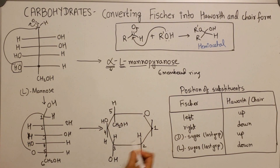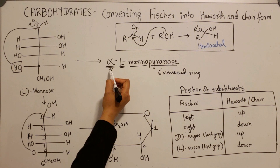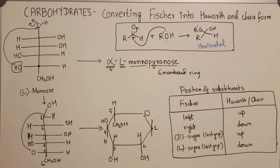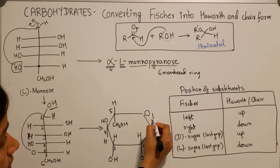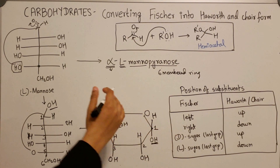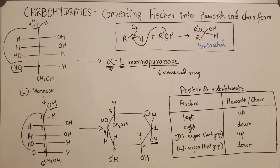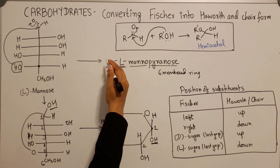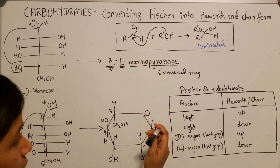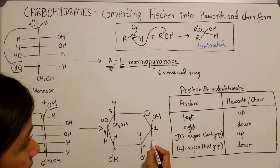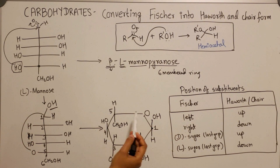This position is the anomeric center. The question asks you to draw the alpha anomer, so alpha means the hydroxy group goes down and H goes up. If the question instead asks you to draw beta-L-mannopyranose, the hydroxy group goes on top and H goes to the bottom; the rest of the substituents remain exactly the same.